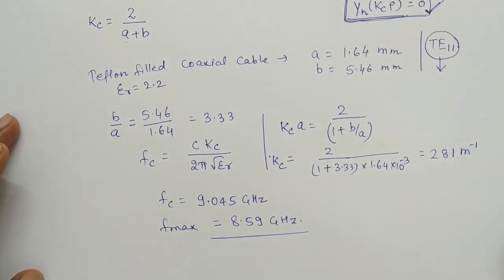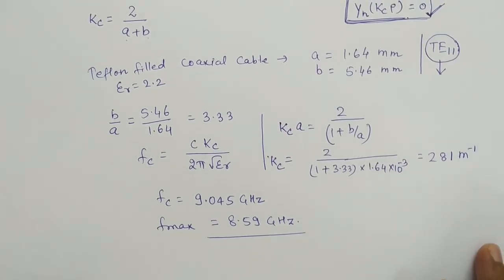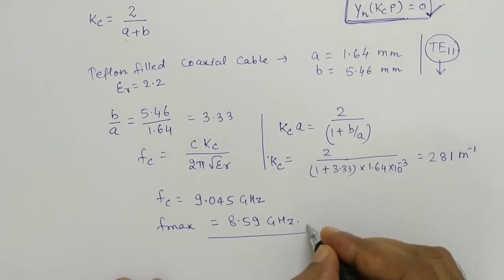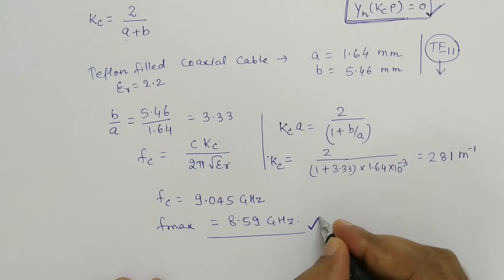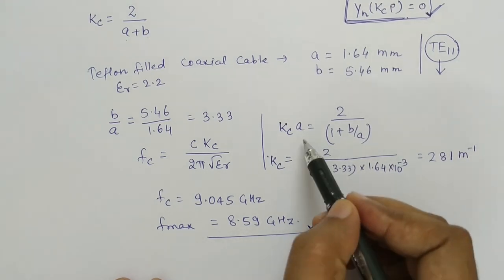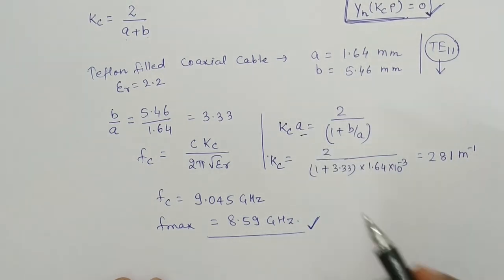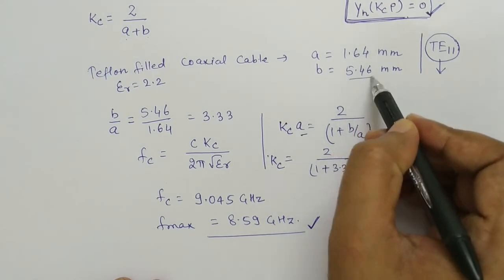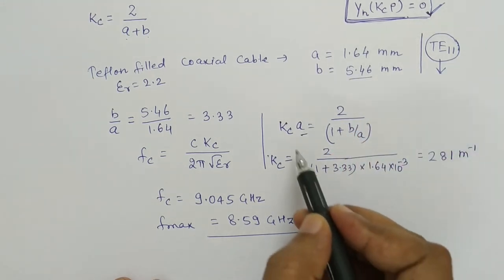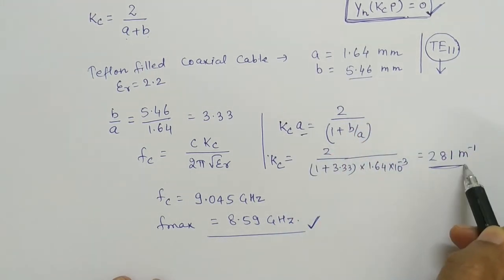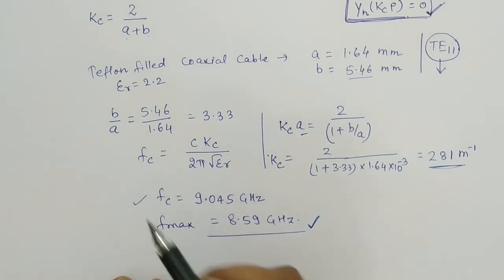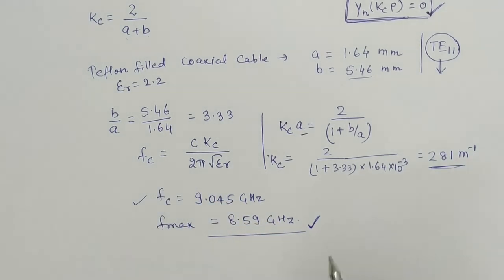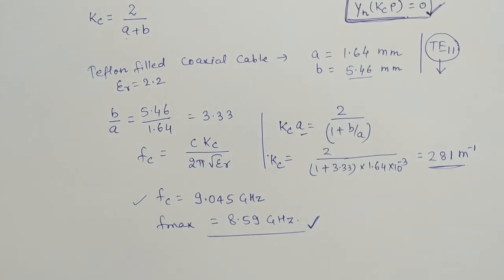So this is how you solve for the coaxial cable and find the maximum possible operating frequency. Here A is the inner conductor radius and B is the outer conductor radius. We calculate the cutoff wave number and apply it to find the cutoff frequency. I hope this helps in understanding coaxial cable. Thank you.